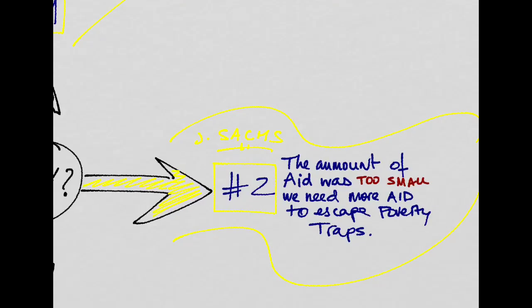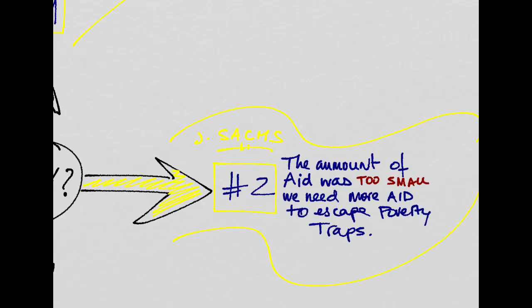A second view, held by Jeffrey Sachs at Columbia, basically says that the reason why aid did not work is because the amount of aid was too small. In order to have a positive impact, we needed more aid, because according to this view, only large amounts of aid are able to allow poor countries to escape poverty traps.